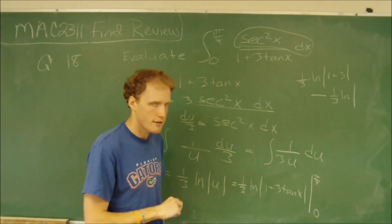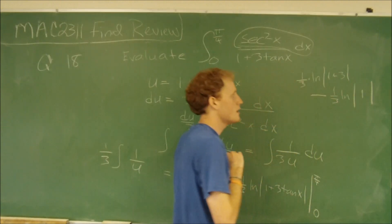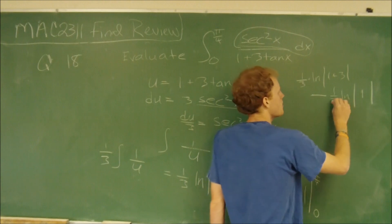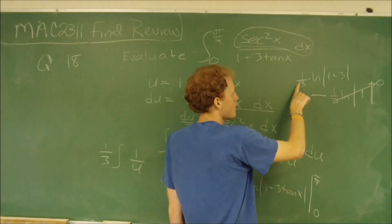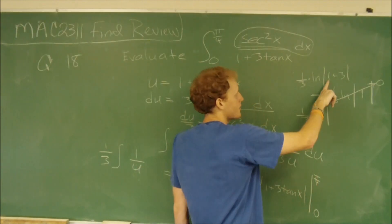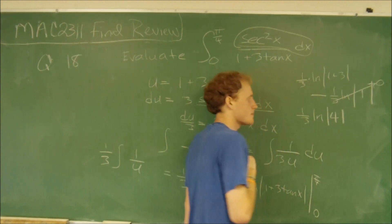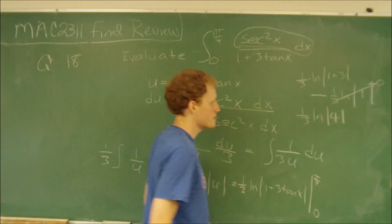So the natural log of 1 is 0. So it will just be 1 third times the natural log of the absolute value of 1 plus 3, which is 4. So it will just be 1 third times the natural log of 4. And that's the answer, which is C.